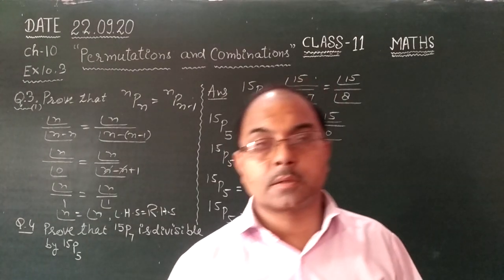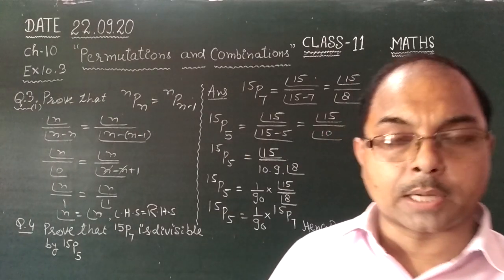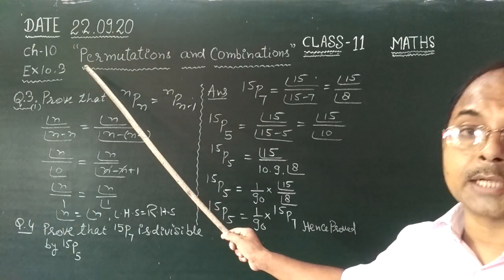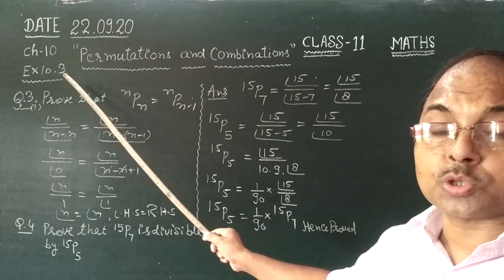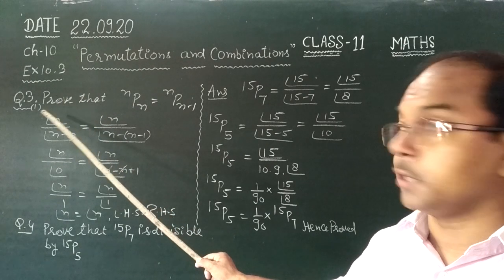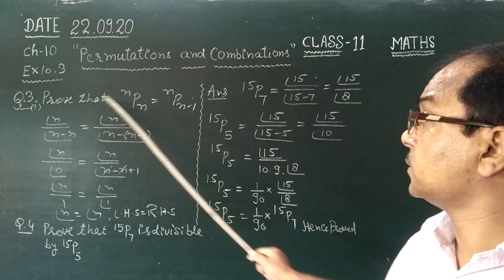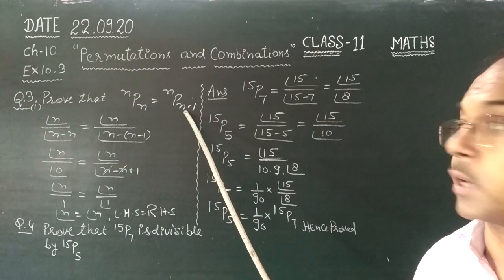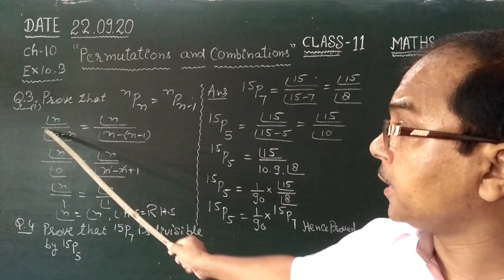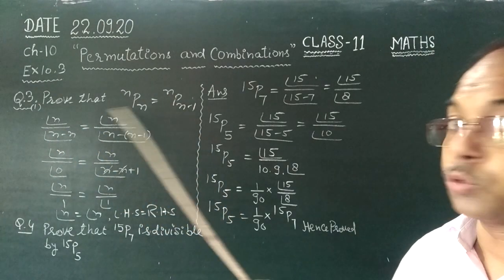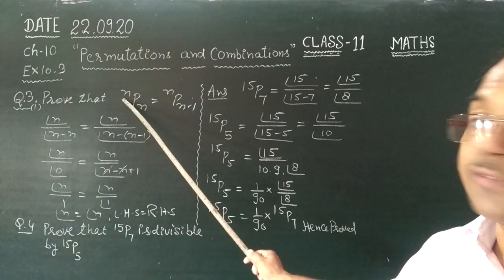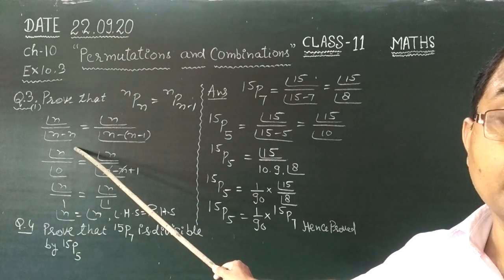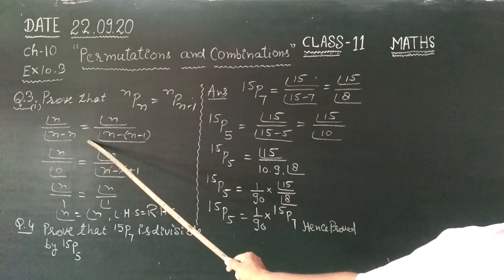Good morning students, Class 11, chapter number 10 Permutation and Combination. We have to do exercise 10.3, question number 2. nPn is equal to nP(n-1). This is the formula.